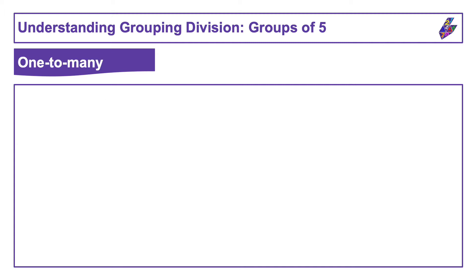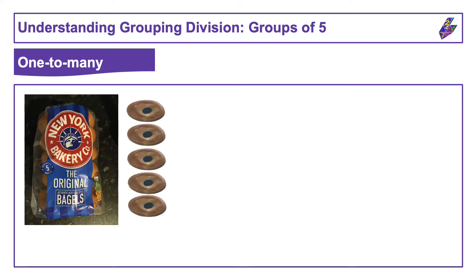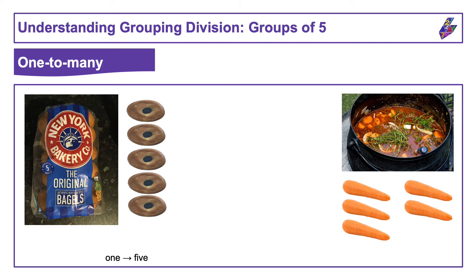In our multiplication video, we saw that one pack of bagels contained five bagels — this was a one-to-five relationship. Another example might be that a particular recipe for making stew requires five carrots. So if one pot of stew uses five carrots, it also has a one-to-five relationship.